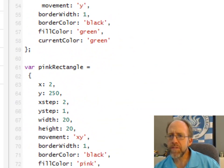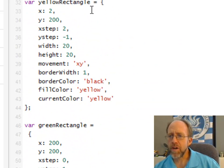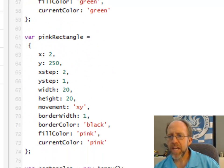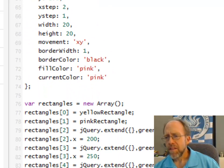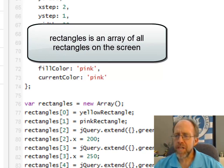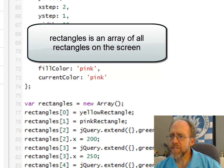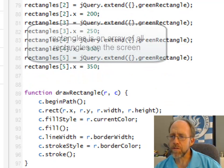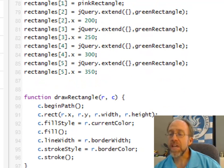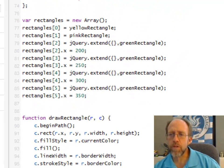I have three defined rectangles here, yellow, green, and pink. Okay, this is a very important concept of objects. The rectangles, I've set up an array of rectangles. In this case, there are six rectangles, 0 through 5.